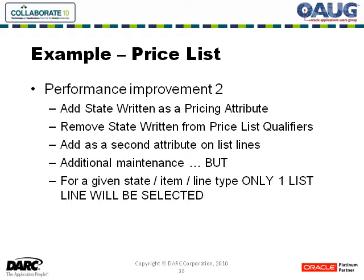The second thing we did was take the qualifying-to-pricing-attribute step one further: we decided to move state down to a pricing attribute as well. So now, if we have a given state and rate type and item, that will get us immediately to one, maybe two, maybe three list lines that the engine will process.